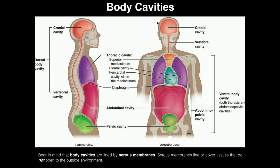What's also important about body cavities is that they tend to be lined by membranes called serous membranes. Let's talk about what a membrane actually is. When you usually think of a membrane, you think of the cell membrane, but a membrane is anything that covers something else.